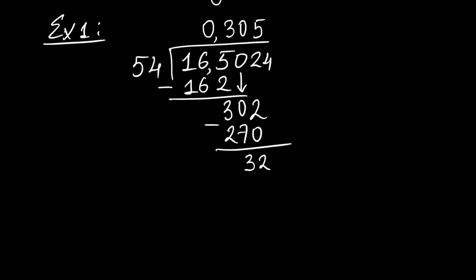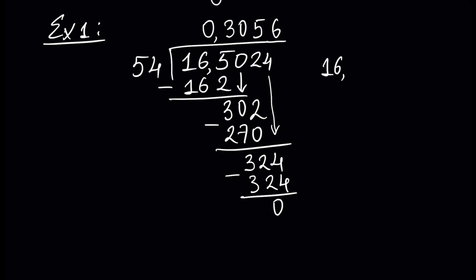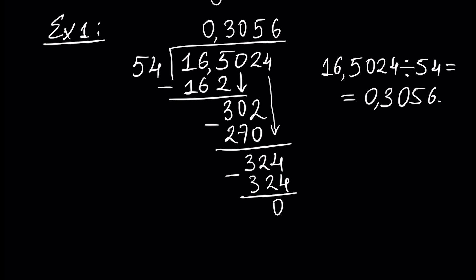We write next number 4, and we have 324. Inside 324 we have exactly 6 54s. Since 6 times 54 is 324, this is minus 324, which is 0. So if we divide 16.5024 by 54, the answer is equal to 0.3056.